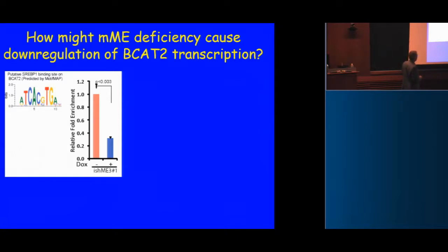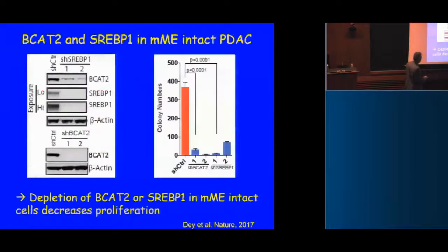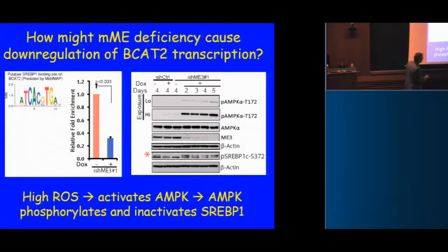ChIP experiments showed that knocking down mitochondrial malic enzyme produces a very significant decrease in SREBP1 binding to the cis-regulatory element of BCAT2. Something was inhibiting SREBP1 activity. SREBP1 activity is regulated by phosphorylation — it's phosphorylated by AMPK. When you have high ROS levels, AMPK becomes activated, phosphorylates many substrates including SREBP1. This phosphorylation event inactivates the coactivation activity of SREBP1. So: high ROS activates AMPK, which phosphorylates and inactivates SREBP1, leading to decreased BCAT2 expression and decreased branched-chain amino acid utilization.